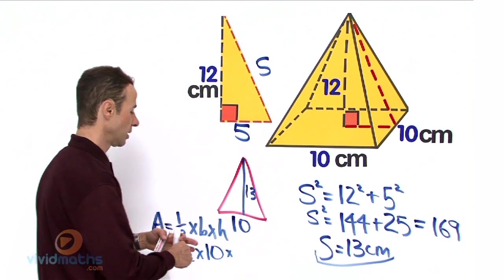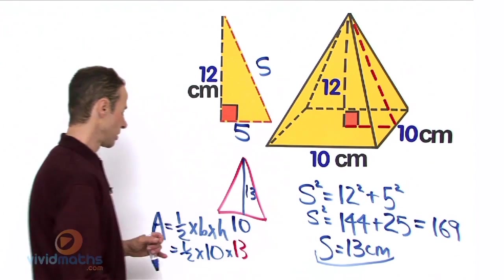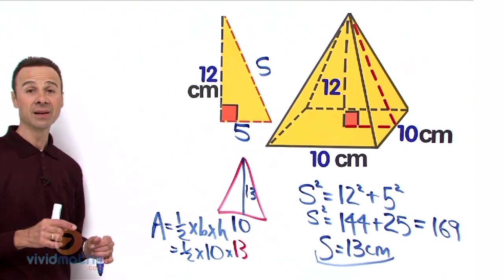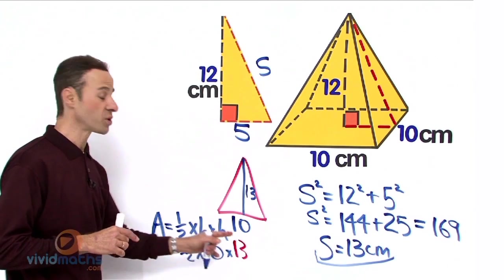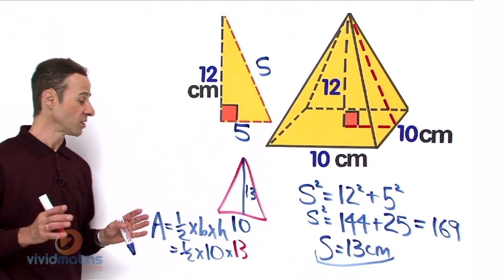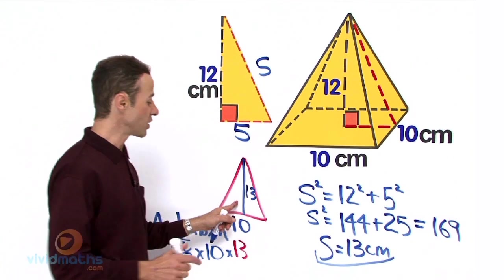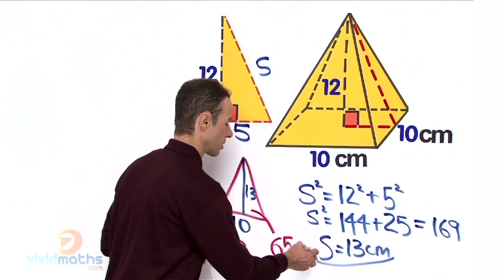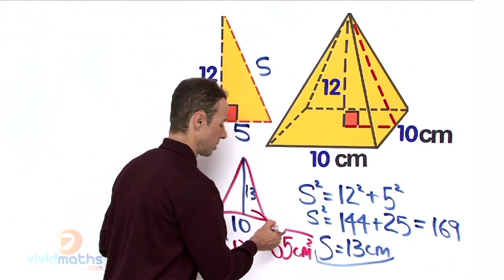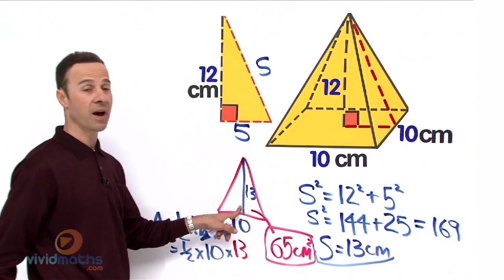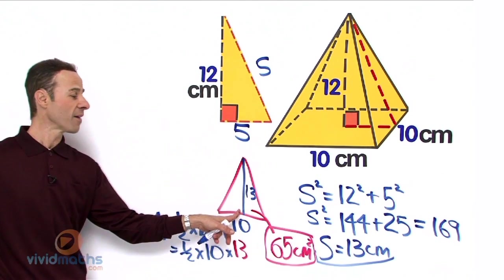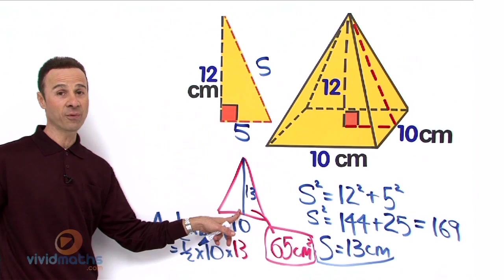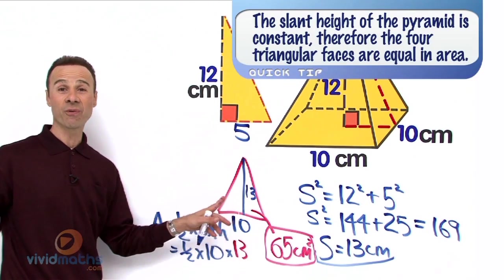So area equals the base is 10 and the height is 13. Let's work that out: half times 10 is 5, 5 times 13 is 65. So that means the area of this face is 65 cm squared.